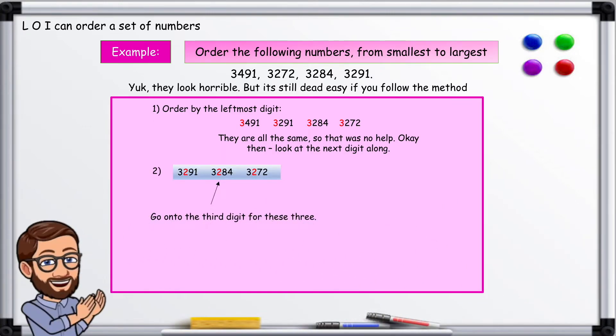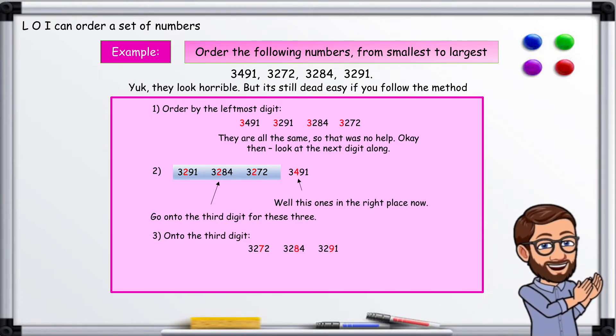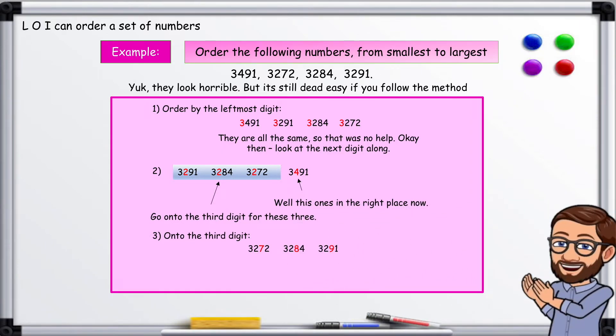Go on to the third digit for these three. Well this one is in the right place now. Onto the third digit. As you can see we're putting these in order of size: 7, 8 and 9. And that's it.